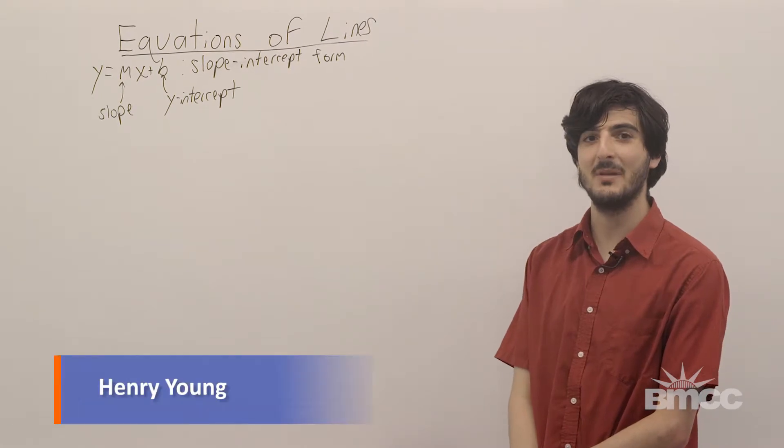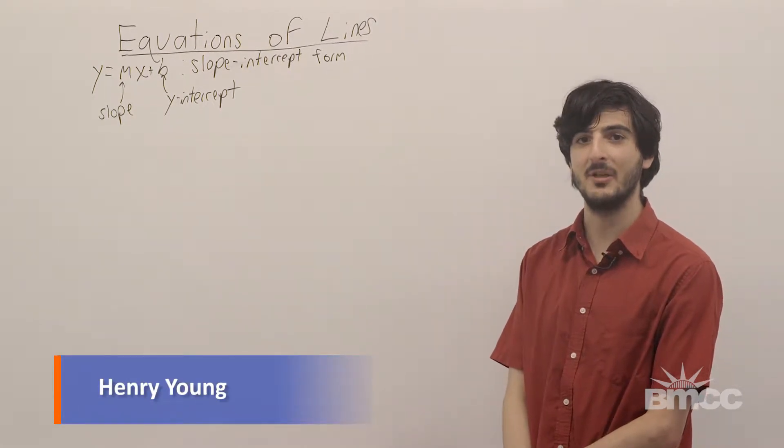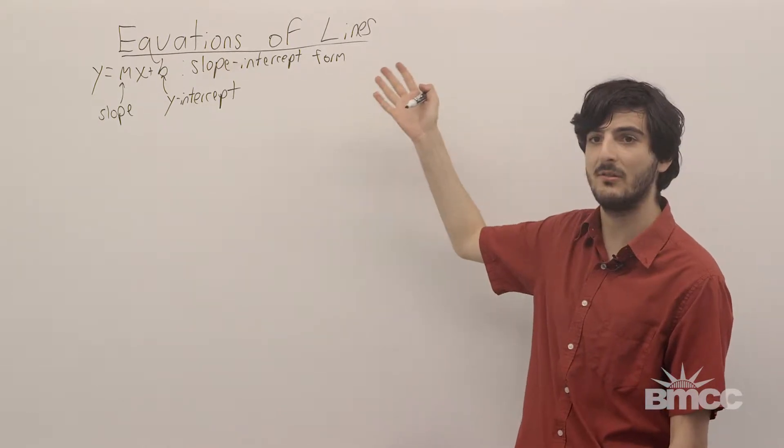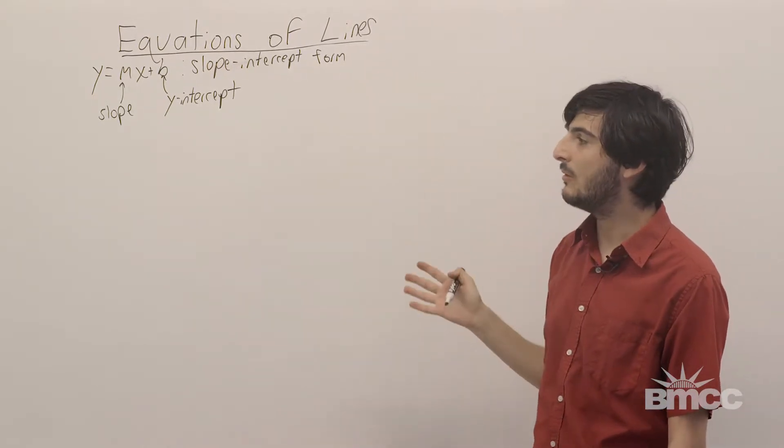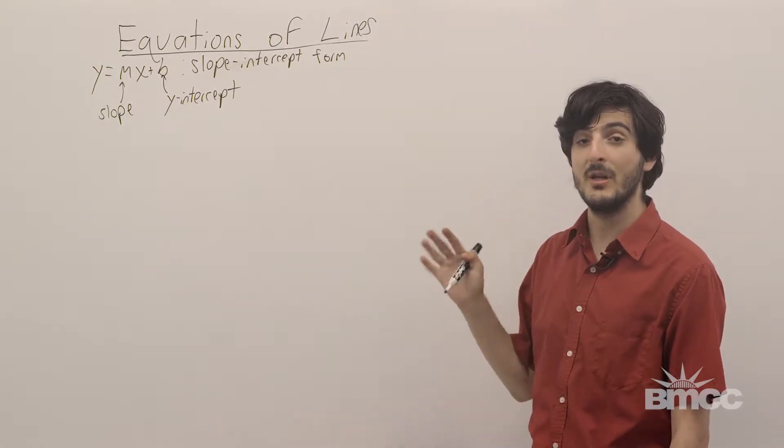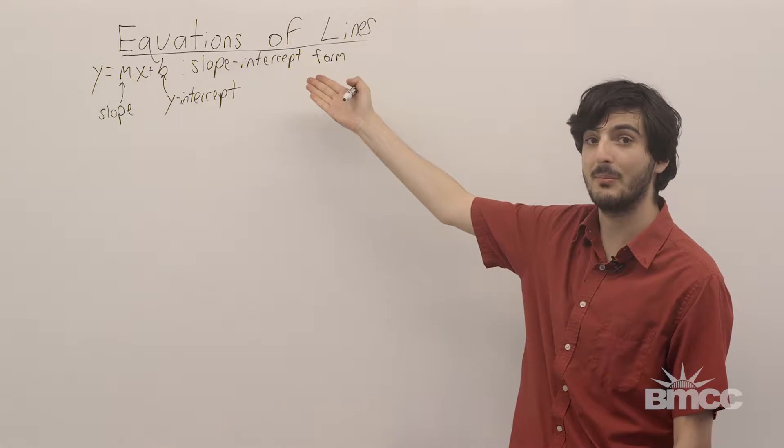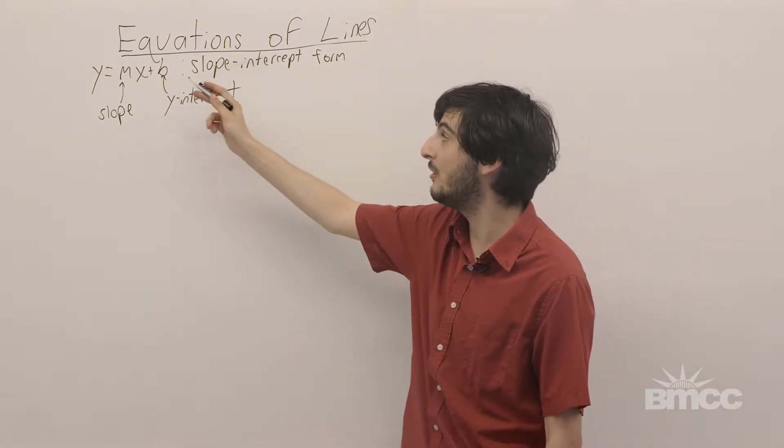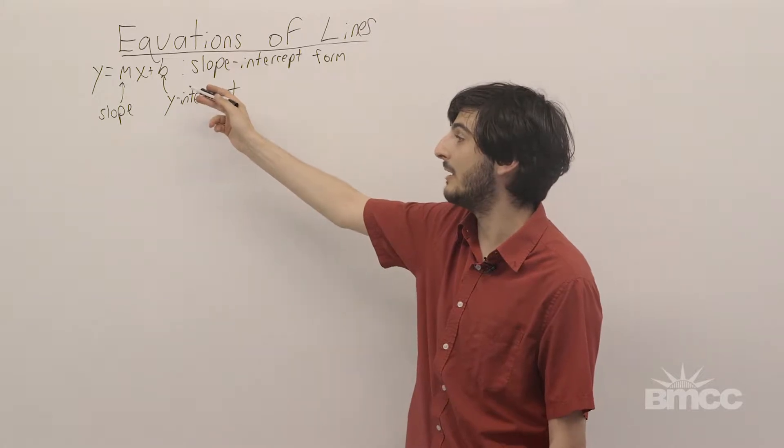Hello, welcome to helpyourmath.com. My name is Henry, and today we're going to continue with equations of lines. Now, we're going to be given two points on the line, and we have to find the equation in slope-intercept form, y equals mx plus b, where m is the slope and b is the y-intercept.